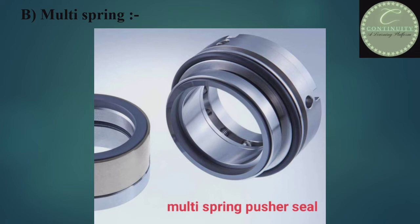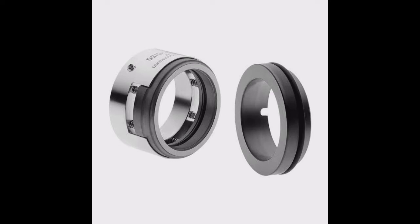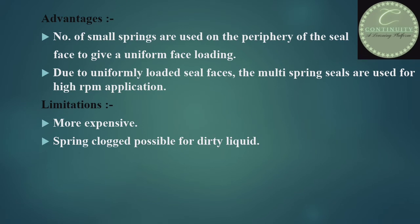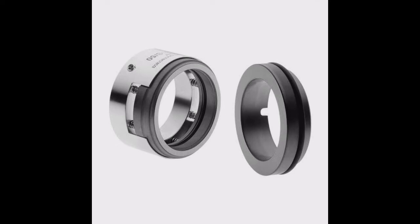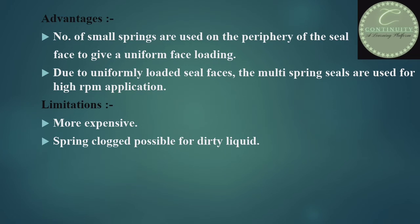Looking at this figure, this is a multi-spring seal — it has multiple springs, not a single spring. Advantages of the multi-spring seal: small springs are distributed on the periphery of the seal face to give uniform face loading, since a single spring does not provide uniform loading on the seal faces. Due to this uniform loading, multi-spring seals are used for high RPM applications. Disadvantages: it is more expensive than the single spring seal, and spring clogging is possible with dirty liquid.